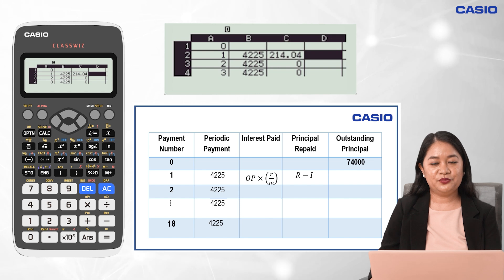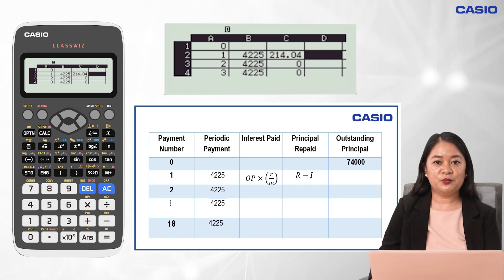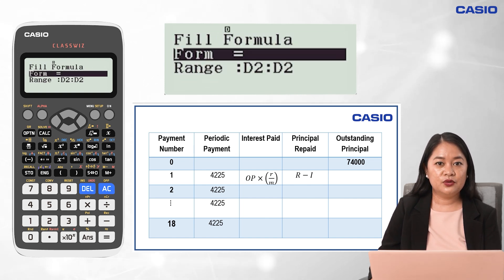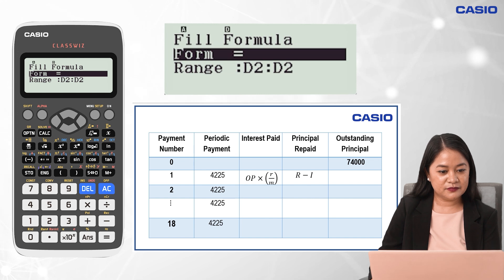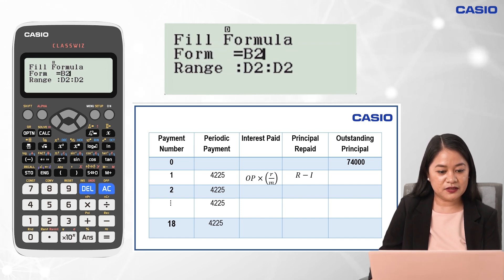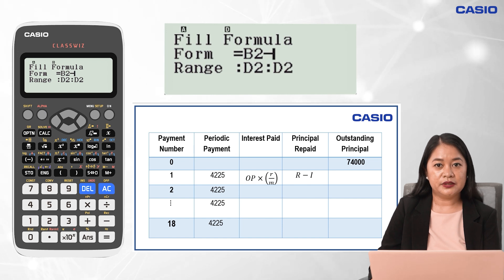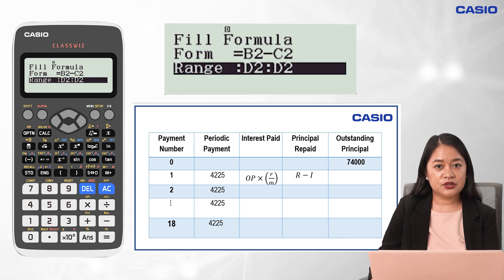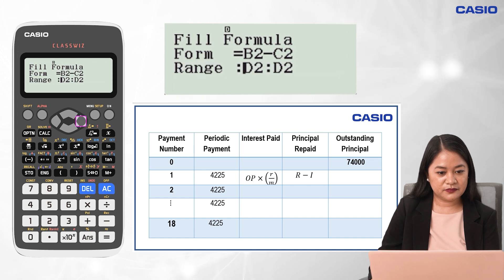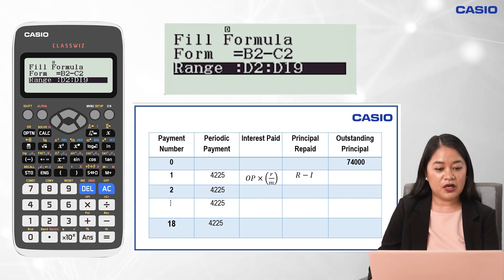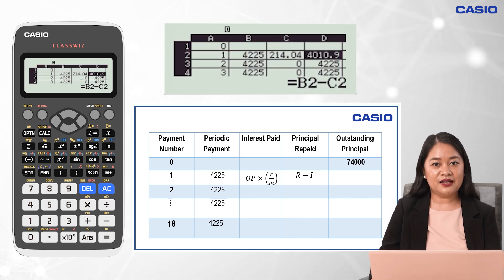For the principal repaid, we get the difference of the periodic payment and the interest payment. From cell D2, input a formula by pressing Option and 1. For the formula, input B2 minus C2 — that is Alpha, DMS, 2, minus, Alpha, x raised to negative 1 button, 2 — then press equal. For the range, change it from D2 to D19, then press the equal button twice. The values after D2will update as we complete the table.